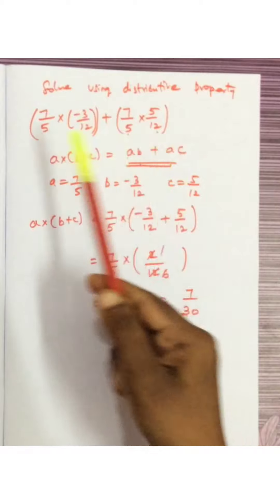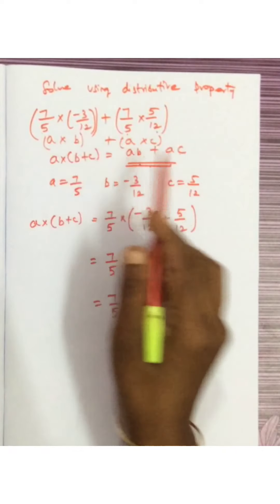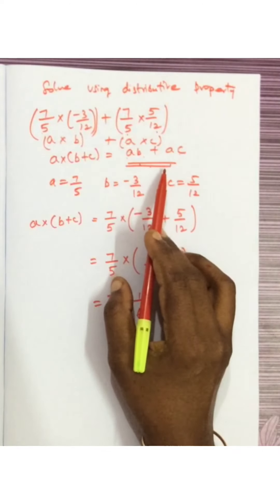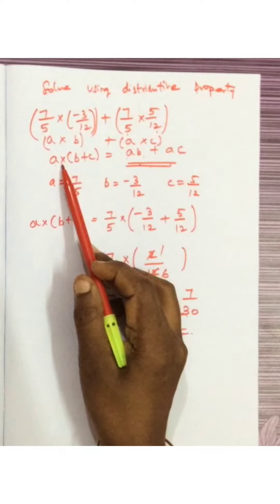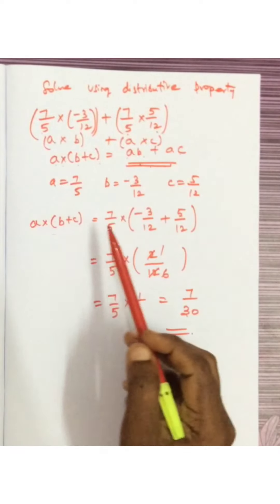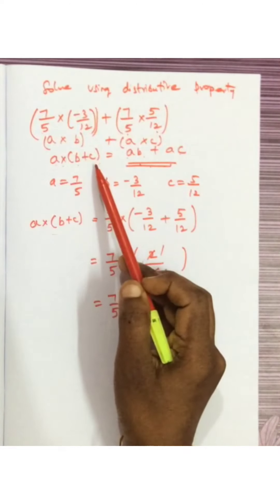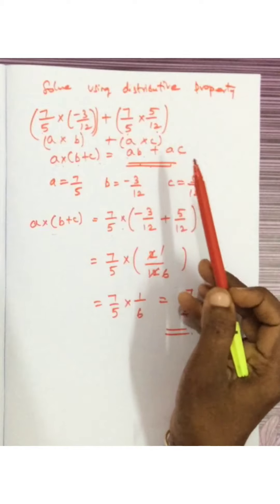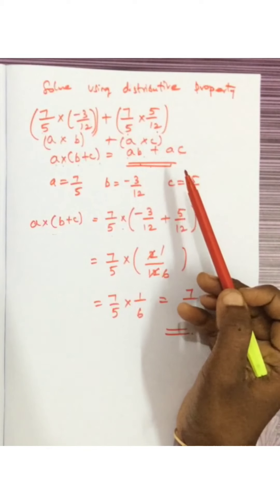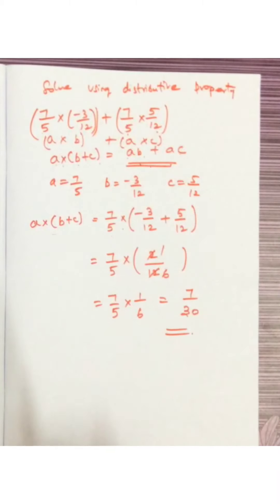The question is in the form of A multiplied by B plus A multiplied by C, which is the right hand side format. If asked to solve using distributive property, rearrange into the form of the left hand side — A multiplied by B plus C — then solve. If the question is given in A multiplied by B plus C form and you are asked to solve using distributive property, write it in the form of AB plus AC. If asked to verify the distributive property, solve the left hand side and right hand side separately and compare the answers.